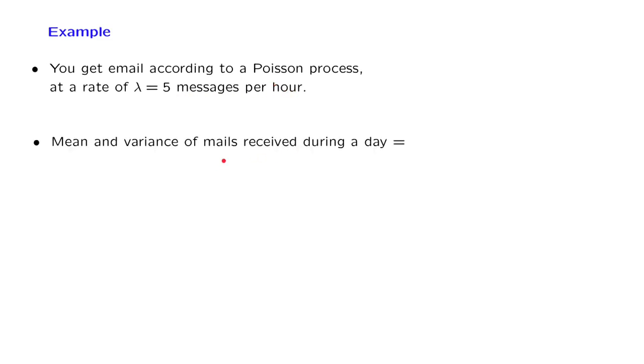What is the mean and the variance of the number of emails received during a day? Well, we have formulas for the mean and variance, and in this problem we have lambda equal to 5, and tau consists of 24 hours, so the answer is 5 times 24. And this answer applies to both the mean and the variance, because for the Poisson random variable, these are the same.